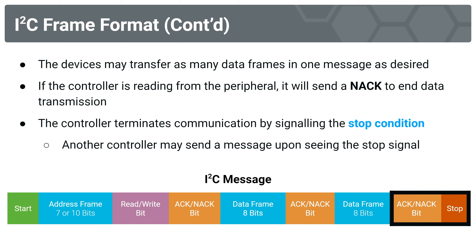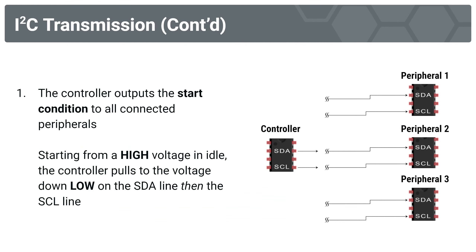Let's look at a step-by-step view of the signals over the I2C lines. Step one: one of the controllers outputs the start condition — a high voltage pulled to low on the SDA line, then a high voltage pulled to low on the SCL line. Once this happens, all other controllers sharing these lines know they must wait until this transmission is done. That's how one controller establishes the start of its transmission.